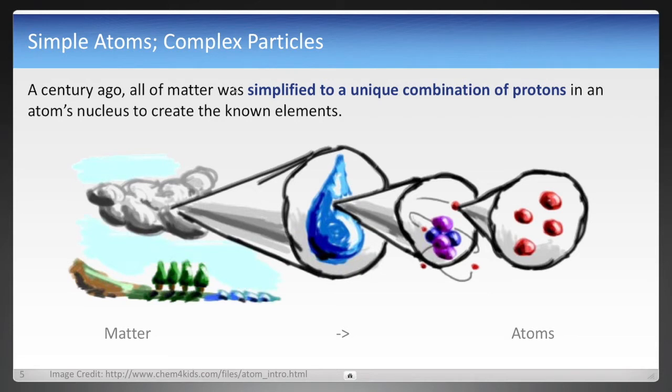The first one is a simplification of matter. About a century ago, all of matter—trees, clouds, water, and other things—were simplified to elements: 118 different elements in the periodic table, which are formed from atoms. Those elements are really nothing more than just a combination of protons. One proton in an atomic nucleus is hydrogen, two is helium, and so forth.